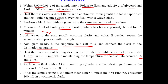After distilling 110 ml in 19 to 21 minutes, replace the flask with a 25 ml measuring cylinder to collect the drainings. Then immerse the 110 ml volumetric flask in water at 15 degrees Celsius for 10 minutes so that the short-chain fatty acids condense into solution and do not escape.